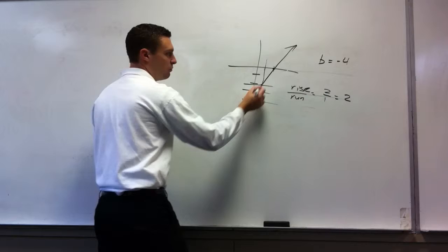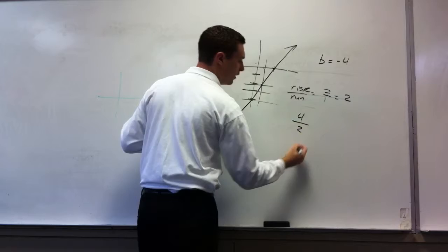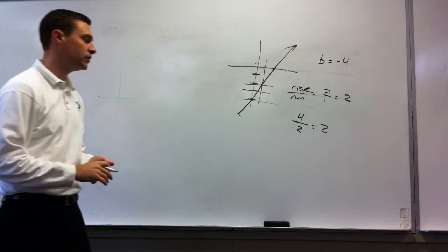Now let's do it again using this point against this point. So if I'm traveling from here to here, how much do I rise? Four. I rise four and I run how many? Two. And four over two reduces to two. Two over one, which is the same as two. It's the same.